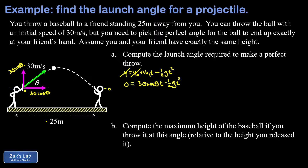This equation has two unknowns: the flight time and the launch angle. But we can solve for the flight time in terms of the launch angle. There are two solutions — t equals zero, which just corresponds to the moment of release — so we cancel one factor of t, leaving a linear equation. Adding one-half g t to both sides, multiplying by two, and dividing by g isolates the flight time: t equals 60 sine theta divided by g.